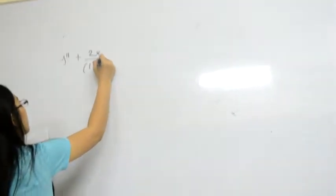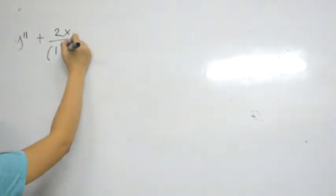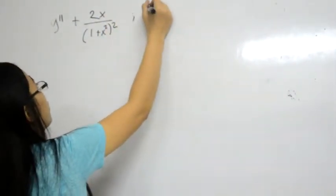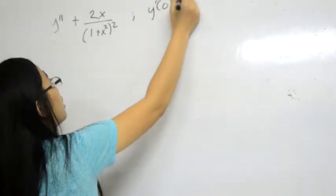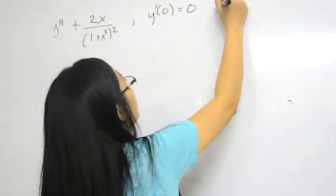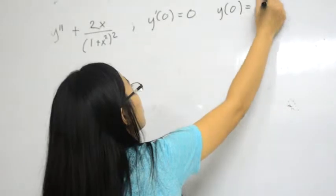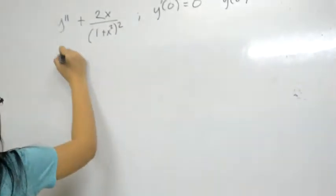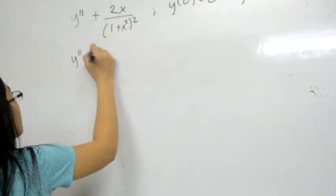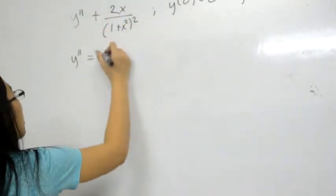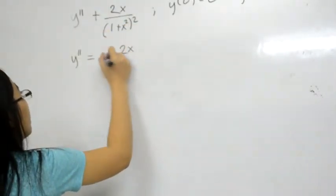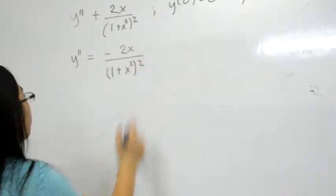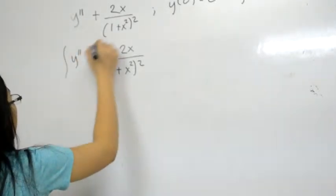Given y'' + 2x/(1+x²)² with the conditions y(0) = 0 and y'(0) = 0. So, integrating both sides,